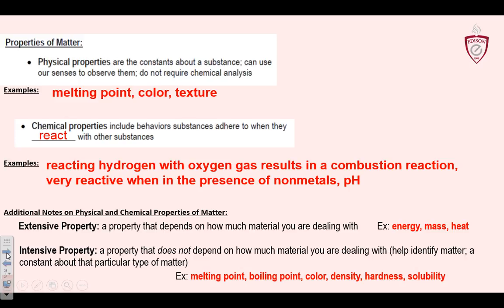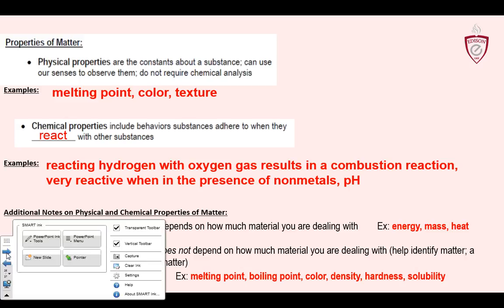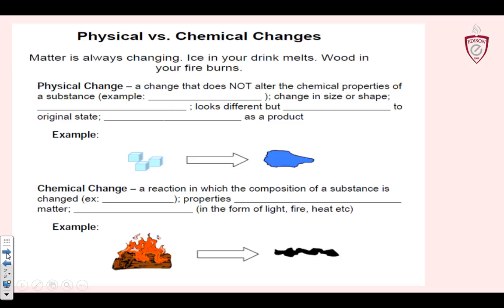Make sure you take proper notes here — this stuff should all be filled out. Now let's look at the difference between physical changes and chemical changes. A physical change is a change that does not alter the substance. It's the same stuff when you're done with it as when you started. So cutting paper or a phase change — cutting paper, for example.